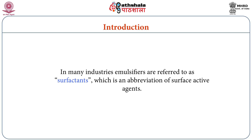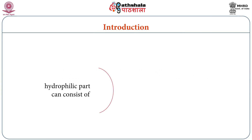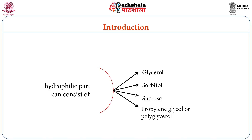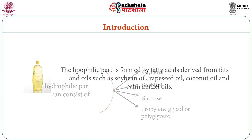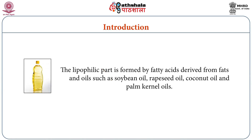In many industries, emulsifiers are referred to as surfactants, which is an abbreviation of surface active agents. In commercial food emulsifiers, the hydrophilic part can consist of glycerol, sorbitol, sucrose, propylene glycol, or polyglycerol. The lipophilic part is formed by fatty acids derived from fats and oils such as soybean oil, rapeseed oil, coconut oil, and palm kernel oils.